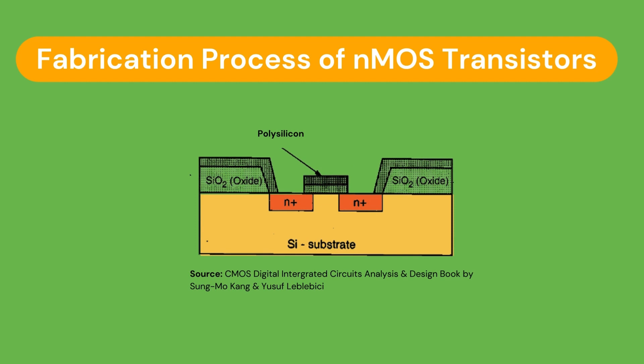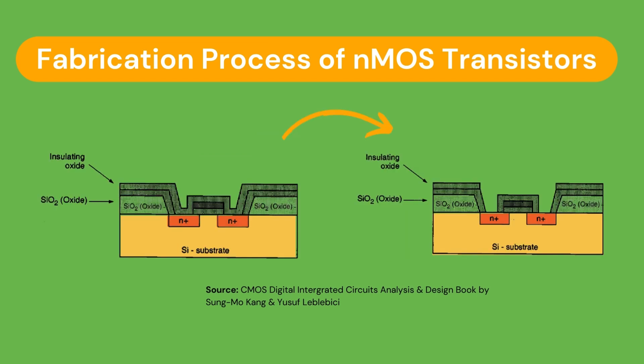This doping process penetrates the exposed areas of the silicon surface, ultimately creating two N-type regions in the P-type substrate, each for the source and drain. This impurity doping also penetrates the polysilicon that is exposed on the surface, reducing its resistivity. Once the source and drain regions have been defined, the entire surface is again covered with an insulating layer of silicon dioxide.